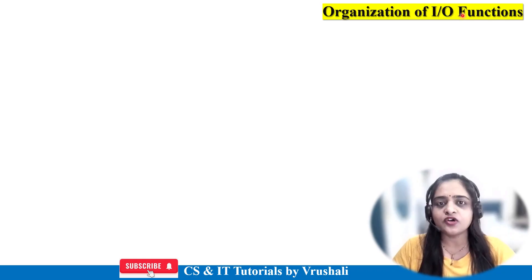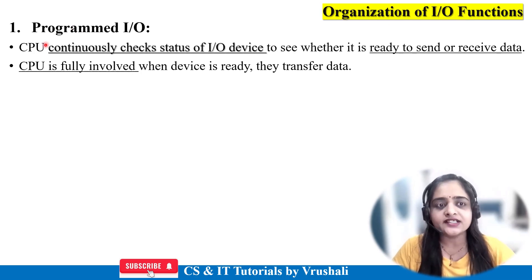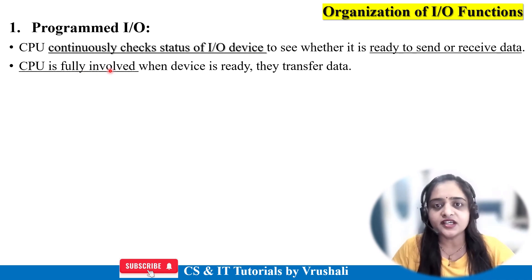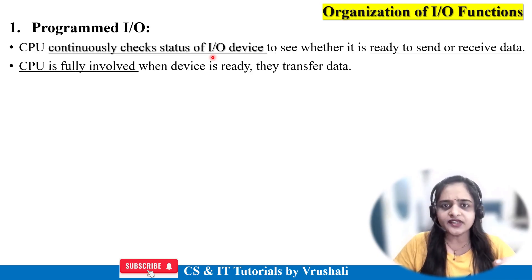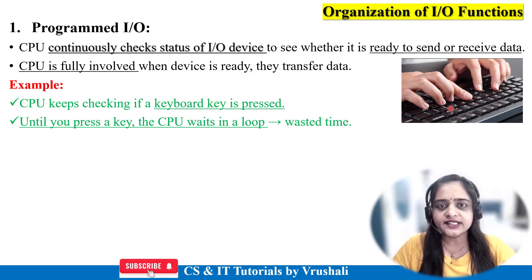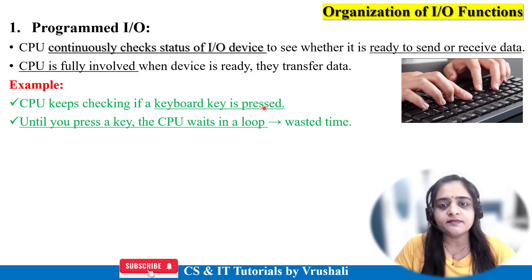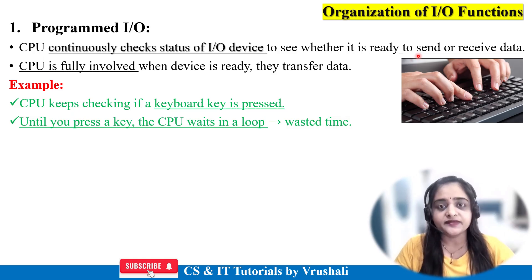The next topic is organization of IO functions. There are four main IO functions in operating system. The first is called programmed IO. Here the CPU is fully involved when the system performs communication or data transfer operations — the CPU continuously checks the status of input-output devices. For example, when the user presses a key on the keyboard, the CPU directly sends that data to the operating system. When the user is not pressing a key, the CPU goes to the waiting state, continuously checking status and performing send or receive operations. This is called programmed IO.